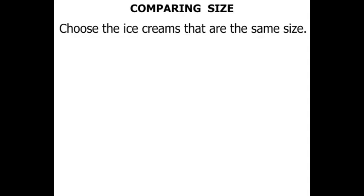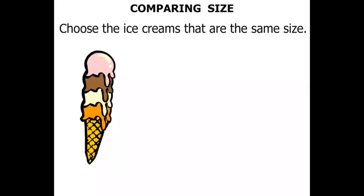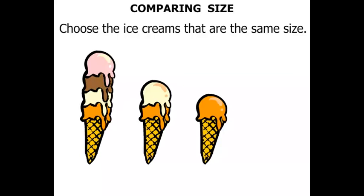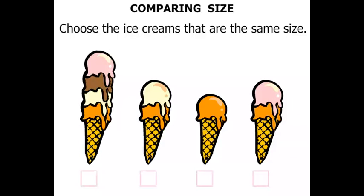We need to choose the ice creams that are the same size. This ice cream has four scoops. This next one has two scoops. This ice cream has a single scoop. And this ice cream has two scoops. There's a little box underneath each one. We need to tick the ones that are the same size. This one here with two scoops is the same size as this one here with two scoops also.